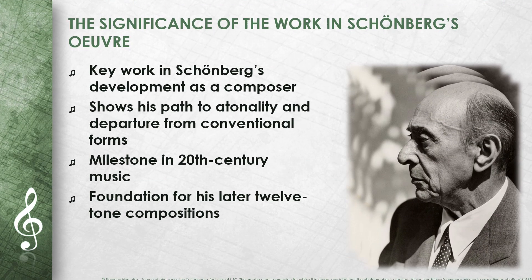The Chamber Symphony No. 1 is a key work in Schoenberg's development as a composer. It shows his path to atonality and his departure from conventional musical forms. The work is a milestone in 20th-century music and influenced many other composers in their search for new forms of musical expression. It represents a turning point at which Schoenberg left traditional harmony behind and laid the foundations for his later 12-tone compositions.